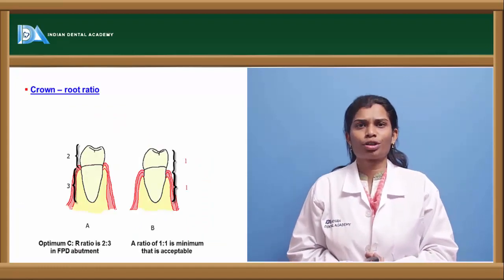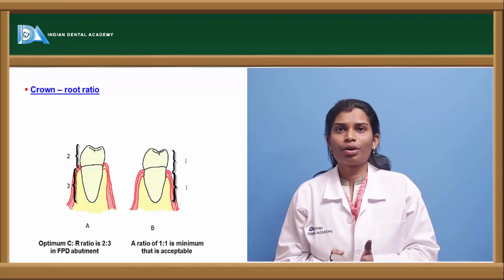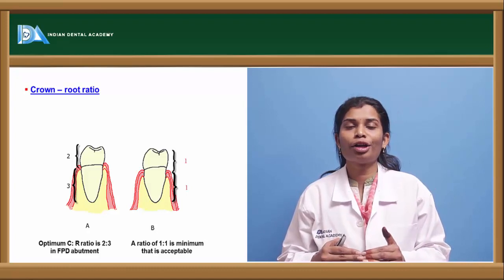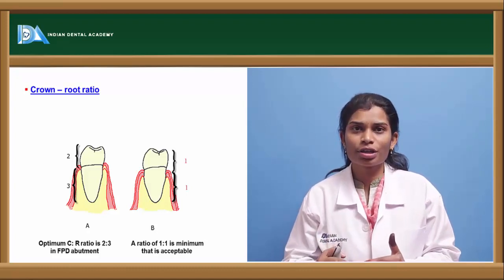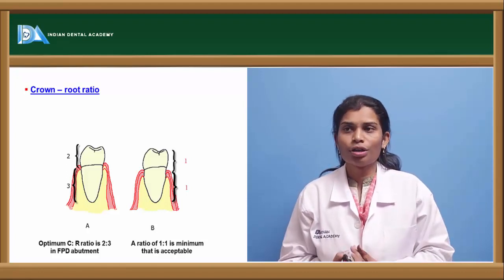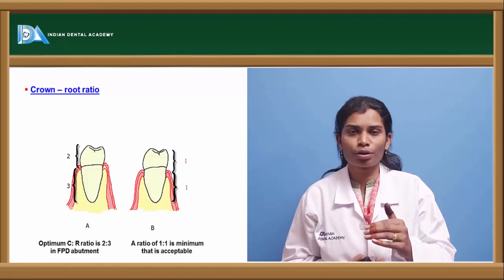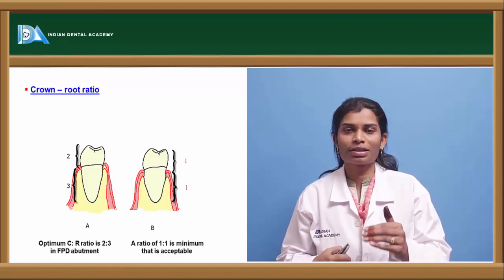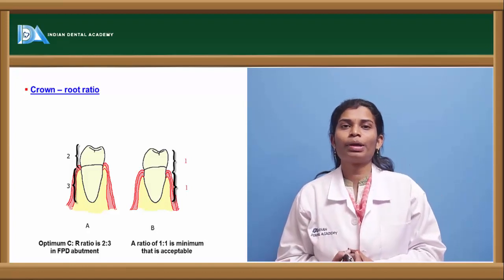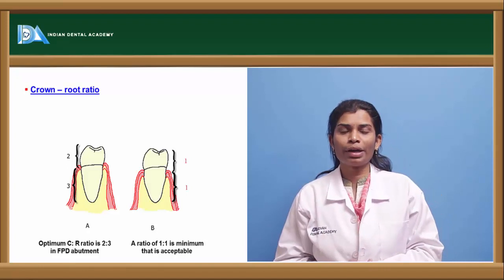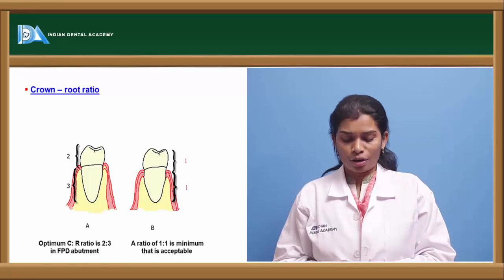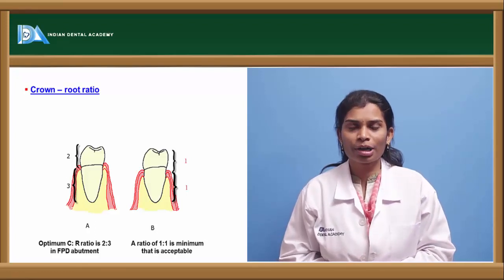Crown-root ratio is the ratio between the amount of crown part above the alveolar crest to the amount of tooth below the alveolar crest to the root apex. The ideal crown-root ratio is 2:3, and the minimal acceptable ratio is 1:1 in order to satisfy good abutment selection criteria.